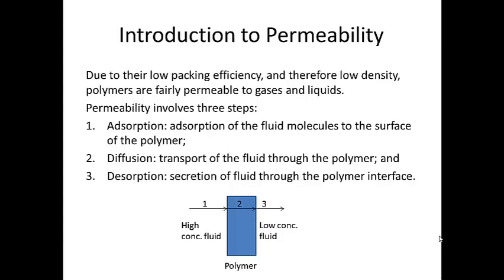There are three steps involved in polymer permeability. The first is adsorption, where the fluid molecules — or often gas molecules — adsorb to the surface of the polymer, putting them in direct contact with the surface and able to diffuse into the polymer membrane. The second step is diffusion, where the gas molecules are transported across the polymer. The third step is desorption, where the gas molecules are secreted from the polymer interface into a region of lower concentration. Just like in diffusion through metals, we have a region of high concentration on one side and low concentration on the other, with a concentration gradient across the polymer membrane.